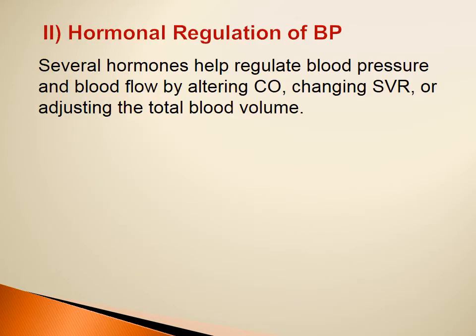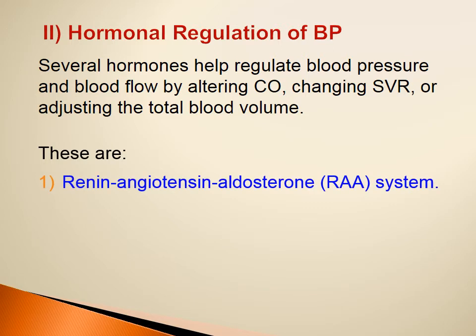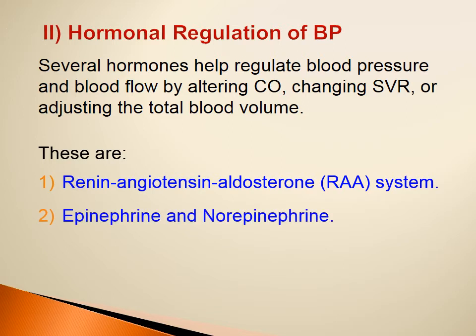The hormonal regulation of blood pressure is via several hormones that help regulate blood pressure and blood flow by changing the cardiac output, systemic vascular resistance, or blood volume. These hormones are the renin-angiotensin-aldosterone system (RAAS), epinephrine and norepinephrine from the adrenal medulla, antidiuretic hormone from the posterior pituitary gland, and atrial natriuretic peptide (ANP) released from the wall of the atria.